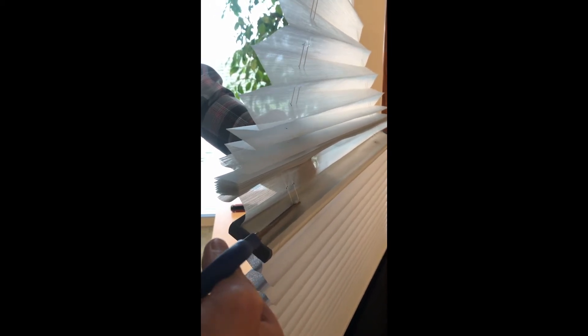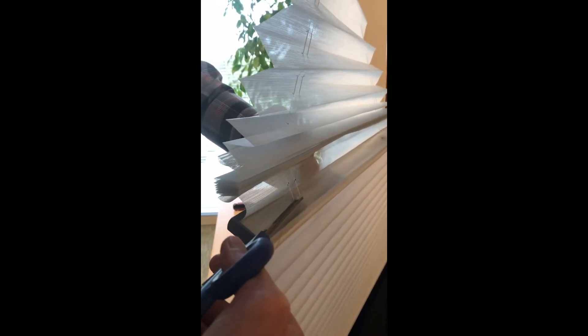You'll also notice that the adjuster is covered with the sheer material of the tri-light shade. To access the adjuster, we're going to make a small cut in the sheer material with a pair of scissors, making sure that we do not cut any of the operating cords.